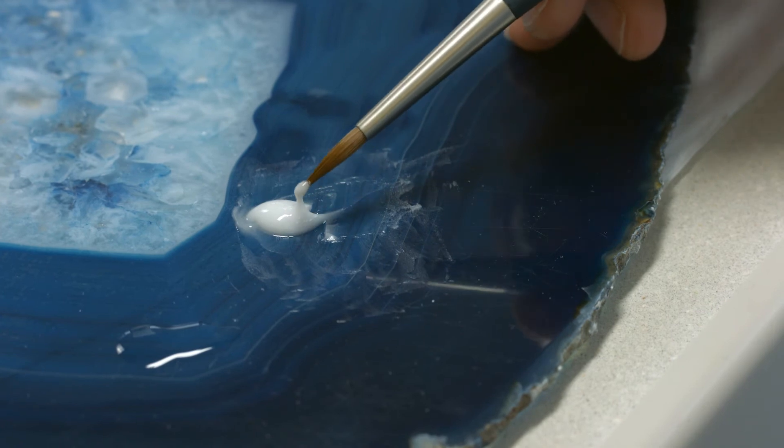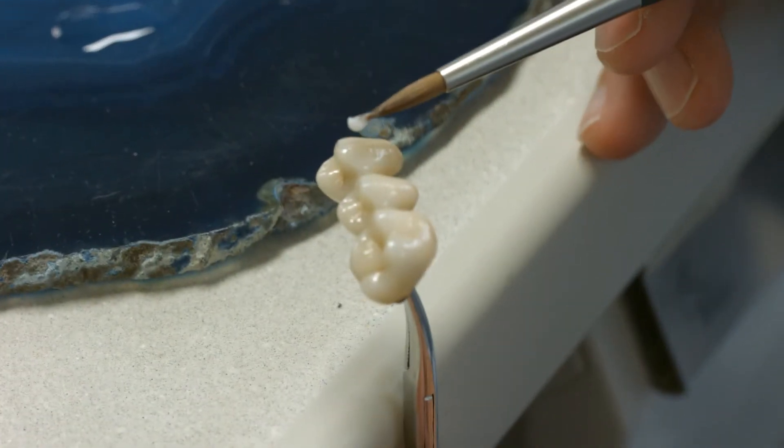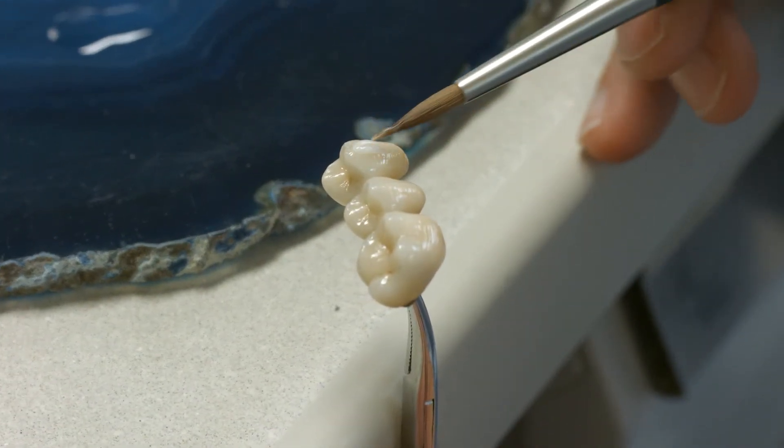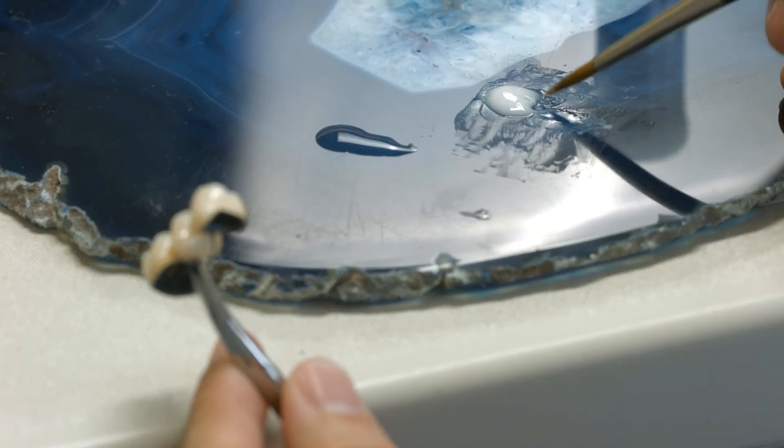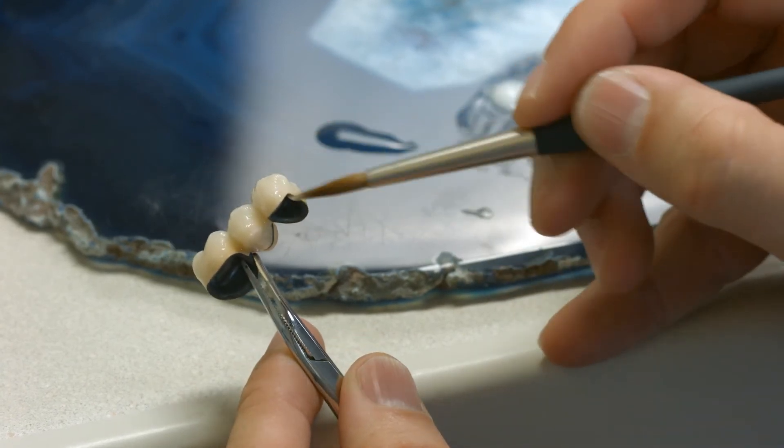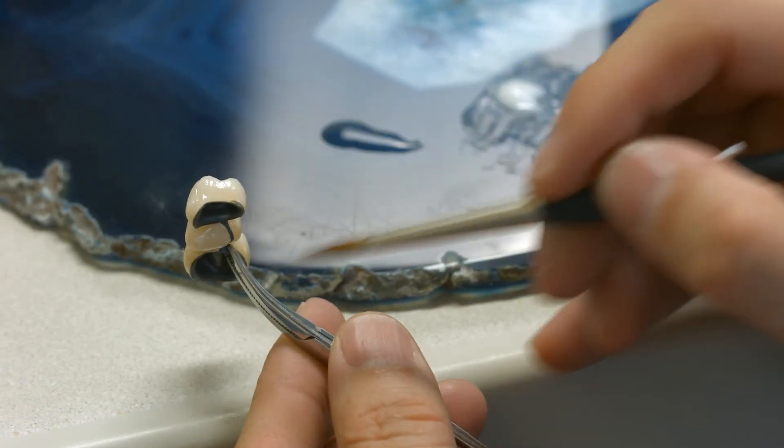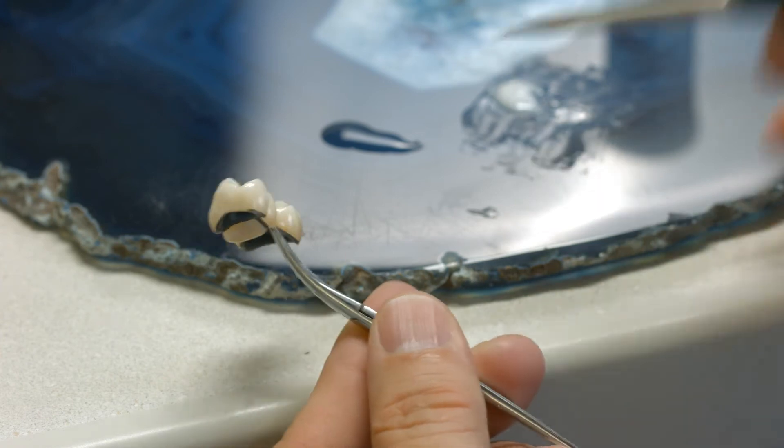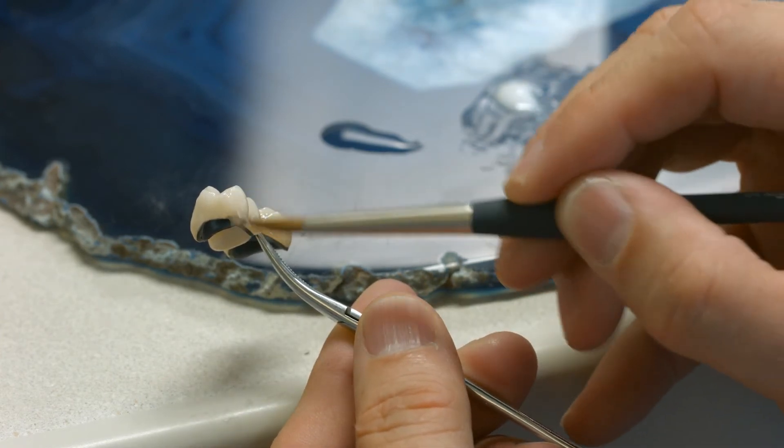Next, apply a generous layer of the glaze with a brush. For a high gloss finish of the restoration, apply a thick glaze layer. The degree of gloss of the glaze surface depends on the consistency and the amount of the applied glaze and not on the firing temperature.